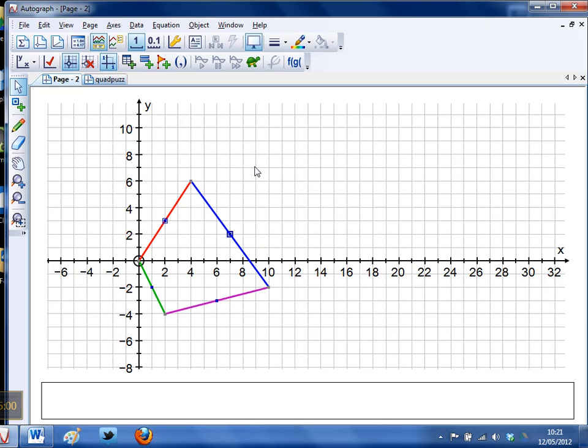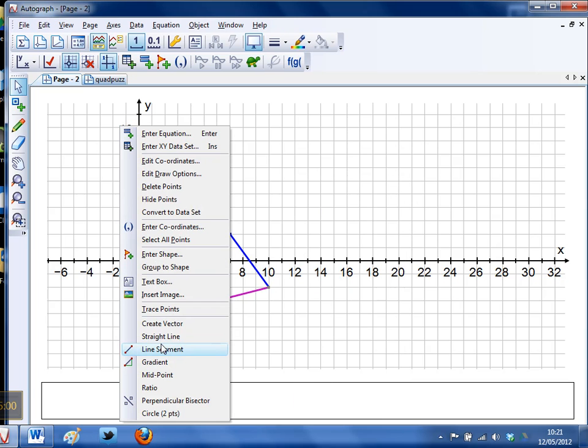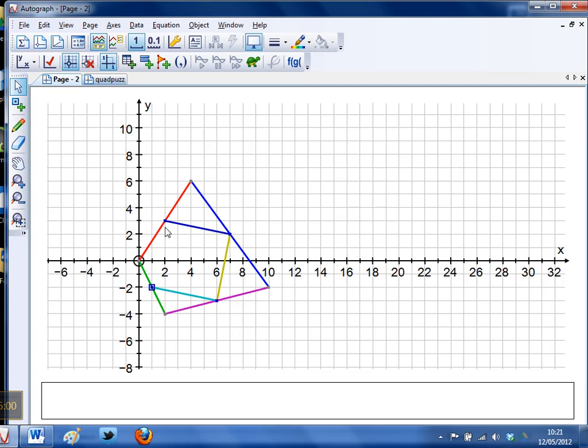So select that, select that, right-click and I'll do a line segment. There to there, right-click and I'll do a line segment. There to there, right-click and I'll do a line segment, and finally there to there.